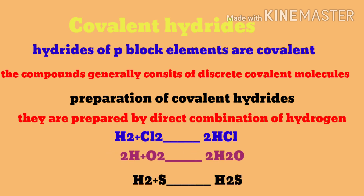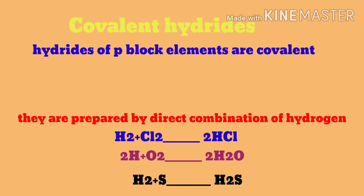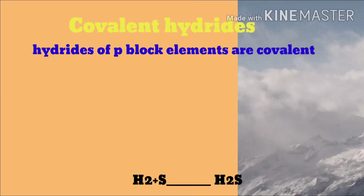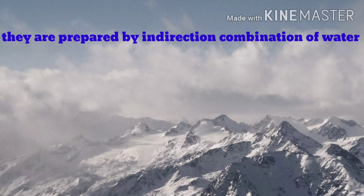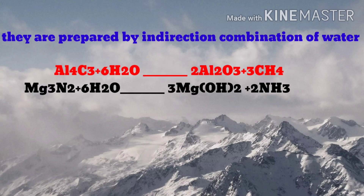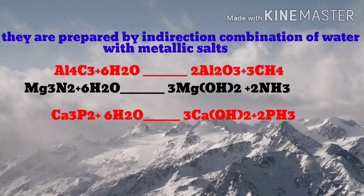Covalent hydrides are hydrides of p-block elements. These compounds usually consist of discrete covalent molecules. Covalent hydrides are prepared by the direct combination of hydrogen with non-metals, or by the indirect combination of water with metallic salts.